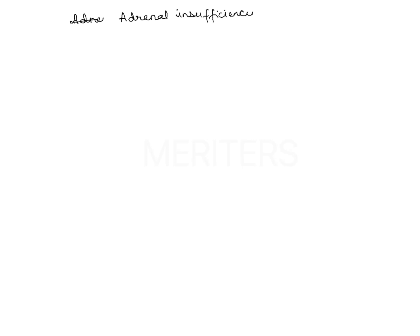Talking of Addison's disease, let's first discuss adrenal insufficiency — a disease of the adrenal gland. This can be either primary or secondary. Primary is characterized by low levels of cortisol and high levels of ACTH (adrenocorticotrophic hormone), or by disruption of ACTH secretion by the anterior pituitary.